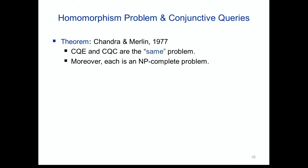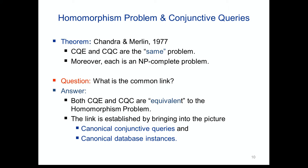The homomorphism problem is NP-complete — easy reduction from tri-colorability: a graph is tri-colorable if and only if there is a homomorphism to the clique K3. So it's NP-complete even when one of the structures is fixed to be K3. Now we come to the first main result: the Chandra-Merlin theorem from 1977, showing that although conjunctive query evaluation and containment seem different, when restricted to conjunctive queries they turn out to be equivalent to the homomorphism problem. Both are NP-complete.